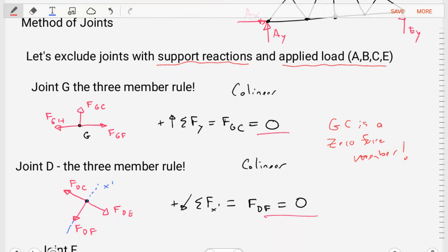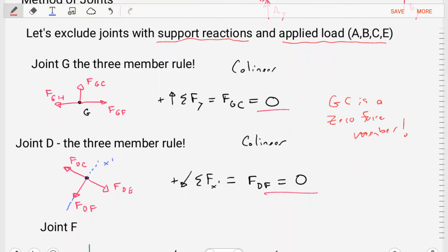Let's create a free body diagram for joint D. And what do we see? We see the same thing. That we have three members and two of those members are collinear. Member DC and member DE. Since they are collinear, equal and opposite to each other, there's nothing to maintain equilibrium in the X prime direction. So the only way to maintain that equilibrium would be if the force DF is equal to zero. That means member DF is a zero force member.